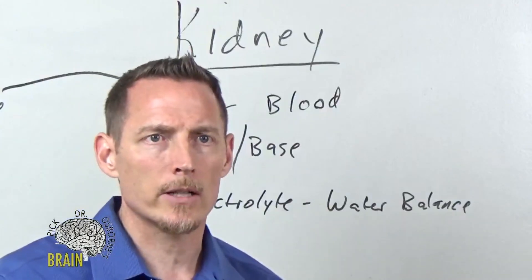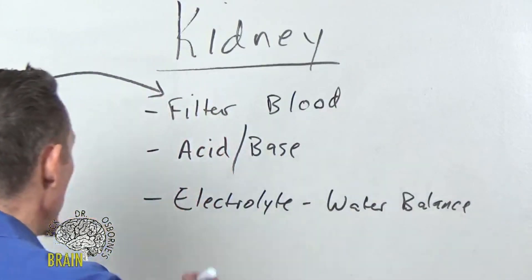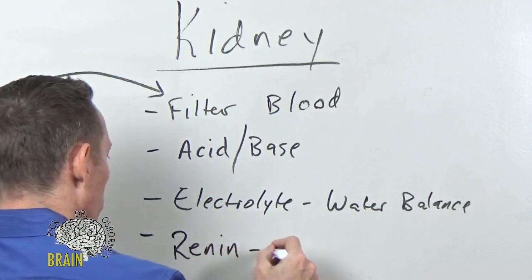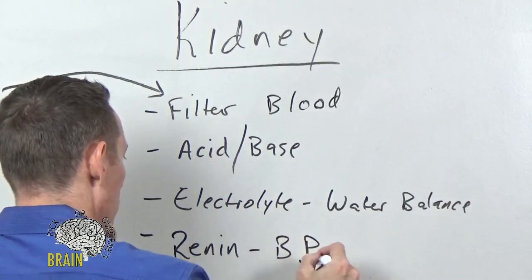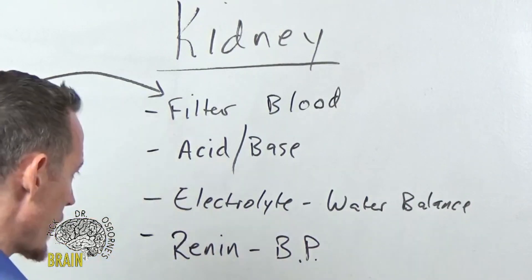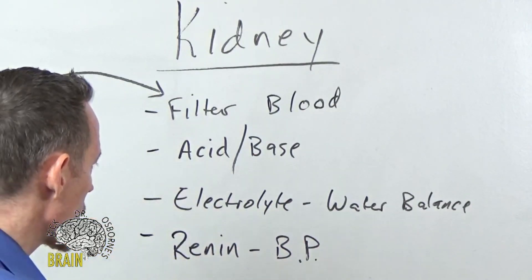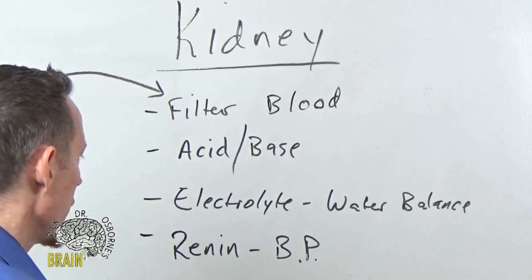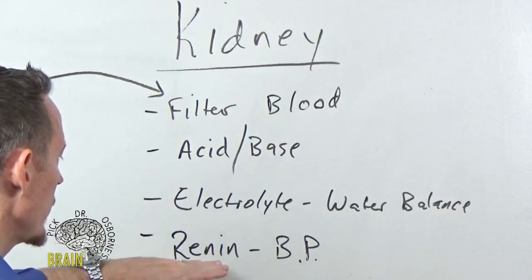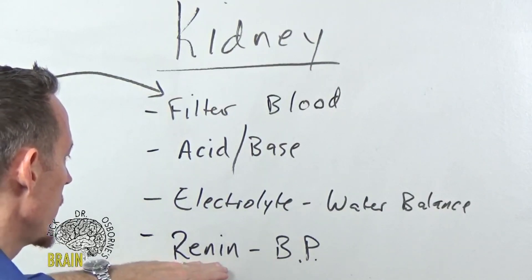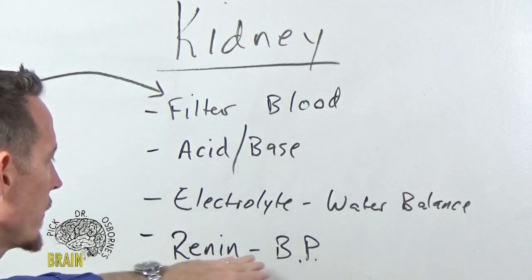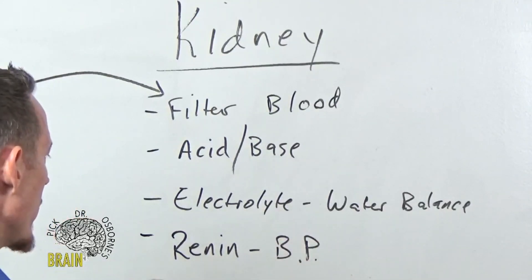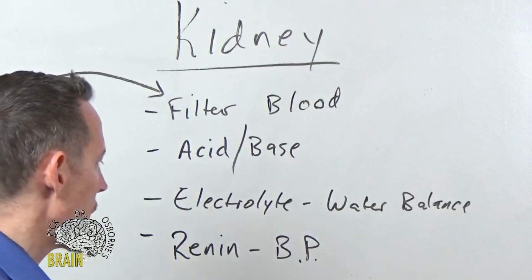The kidney also produces a hormone called renin. Renin regulates blood pressure. This is why sometimes doctors will give you medications to control blood pressure—it's actually through a type of hormone downstream from renin called angiotensin. Renin is produced by your kidneys, which helps maintain and regulate your blood pressure.